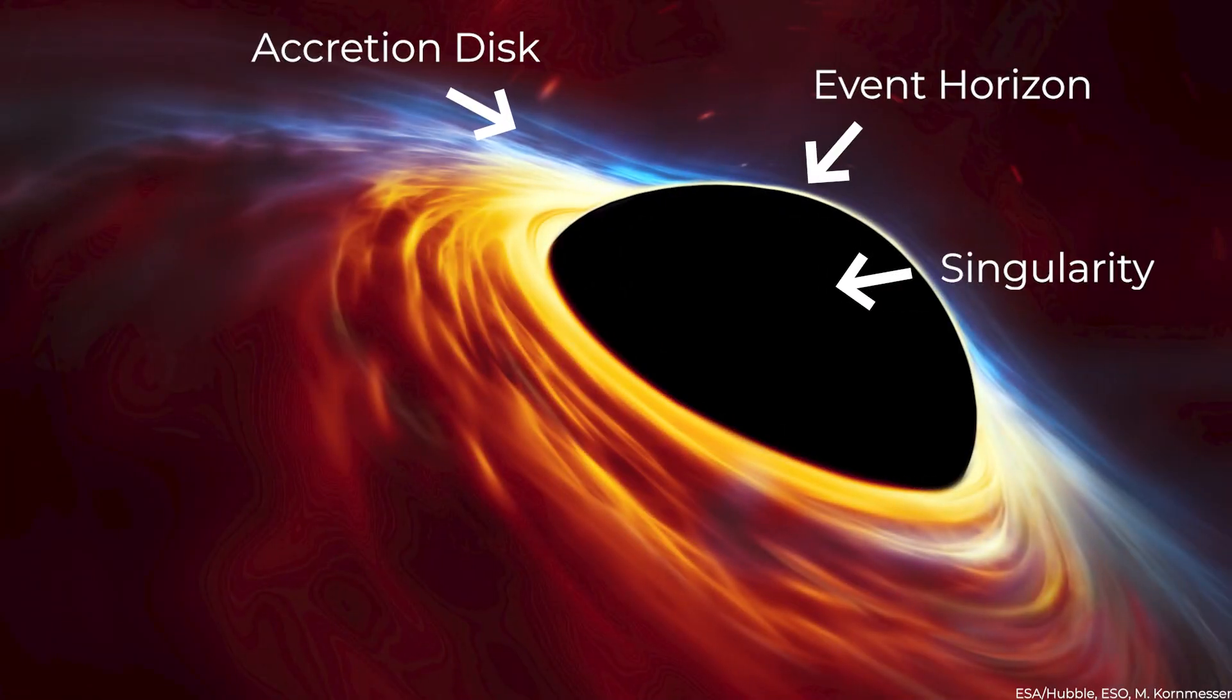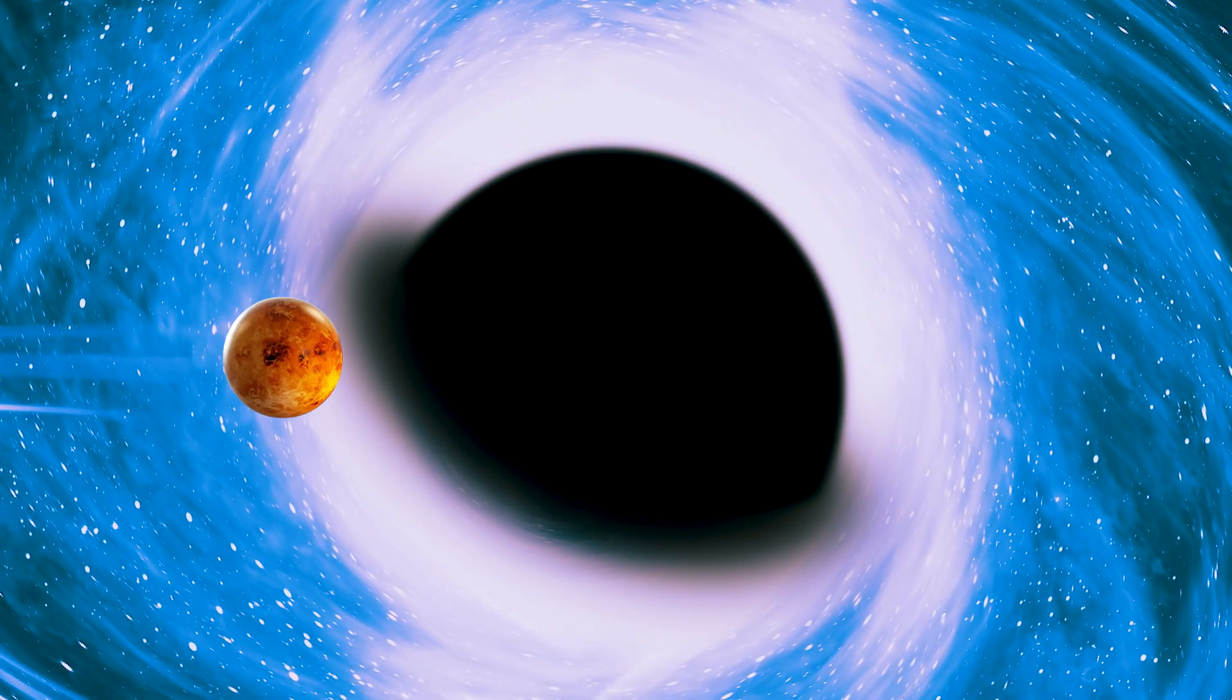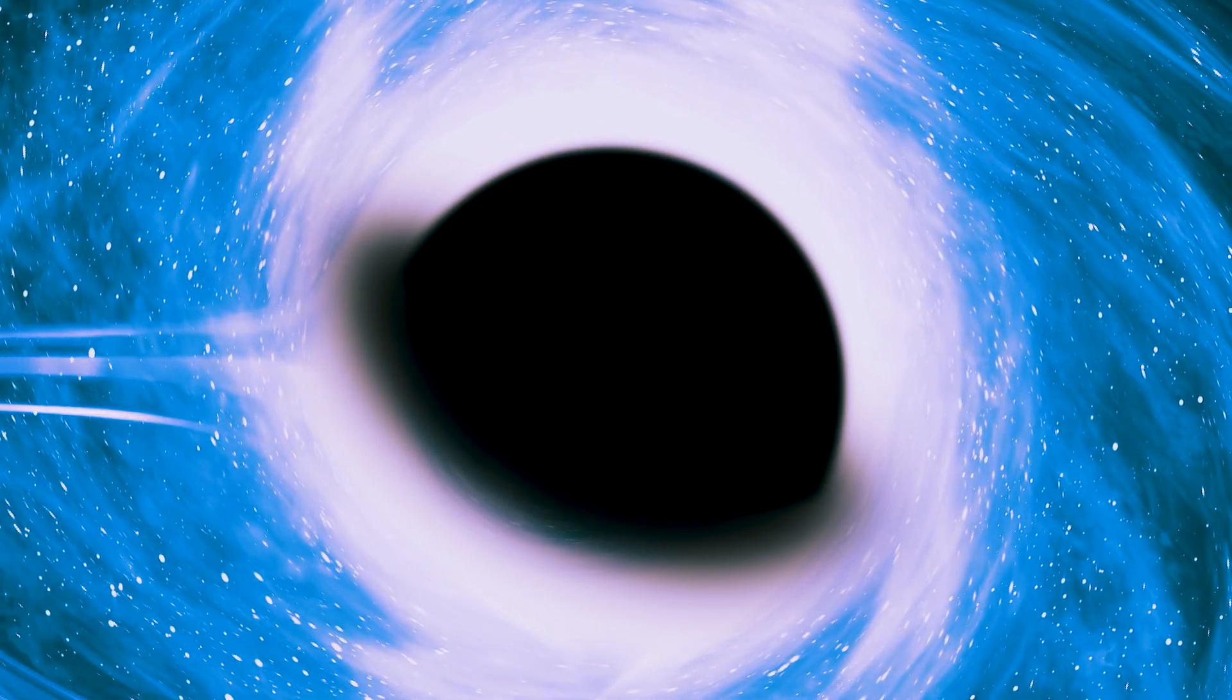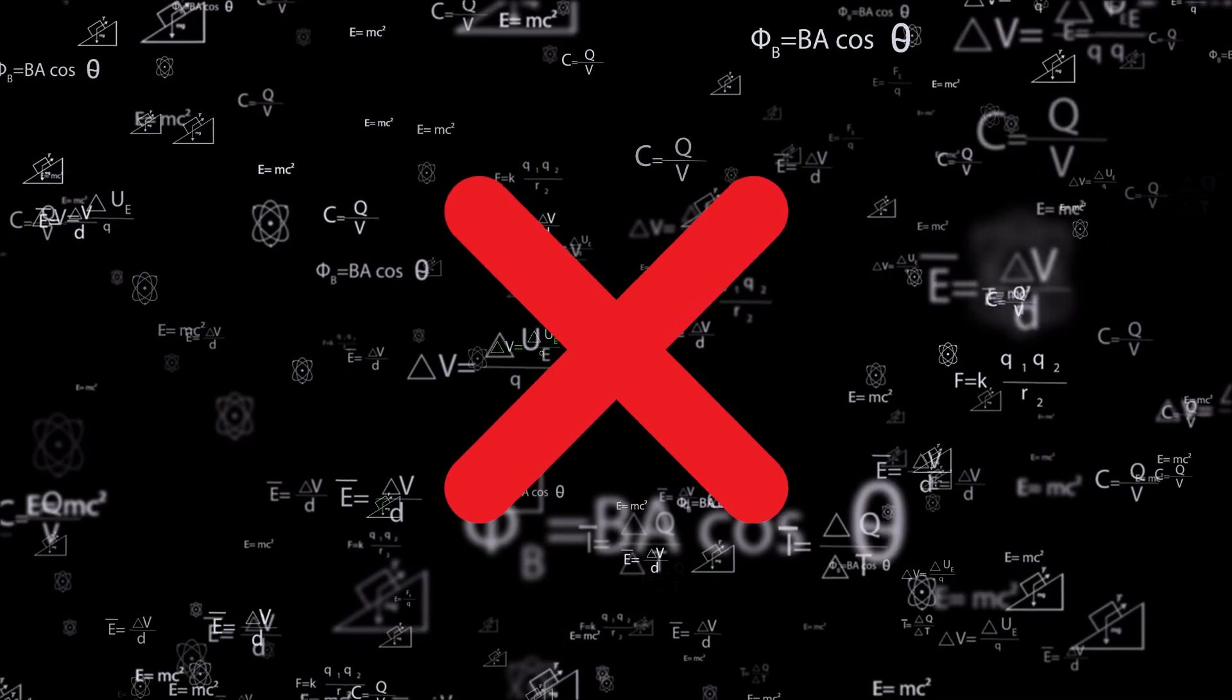Once you get too close to a black hole, you will notice a threshold beyond which is nothing. This is called the event horizon, also known as the place of no return. All matter beyond this point is squeezed into an infinitely tiny space and the laws of physics no longer apply.